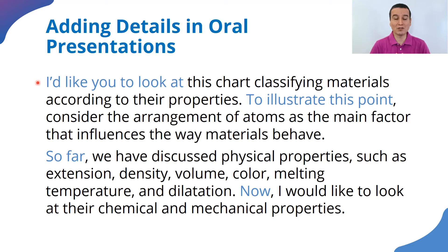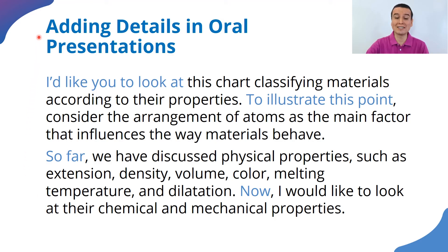Now pause and listen to the pronunciation of the native speaker, then pronounce after her. 'I'd like you to look at this chart classifying materials according to their properties. To illustrate this point, consider the arrangement of atoms as the main factor that influences the way materials behave. So far we have discussed physical properties such as extension, density, volume, color, melting temperature, and dilatation. Now I would like to look at their chemical and mechanical properties.'